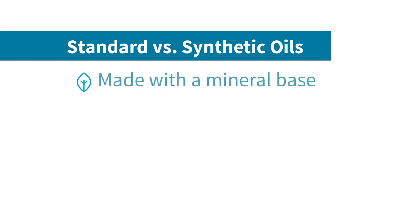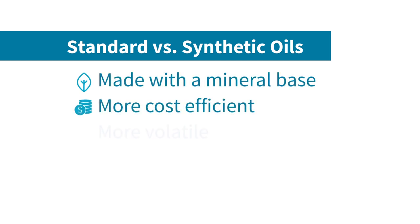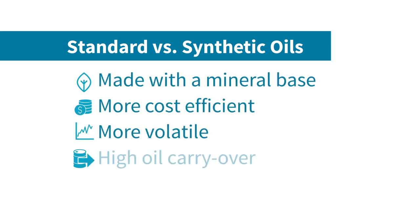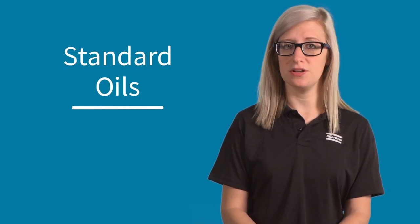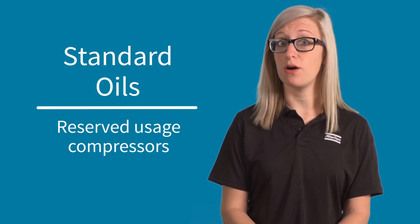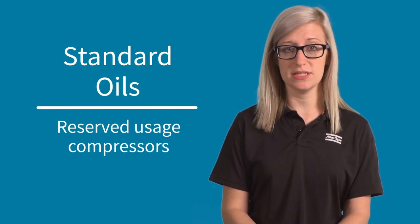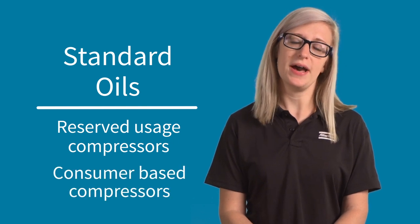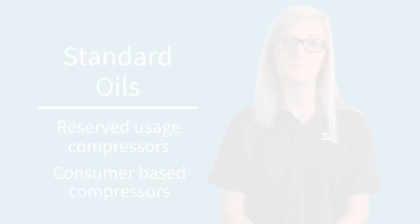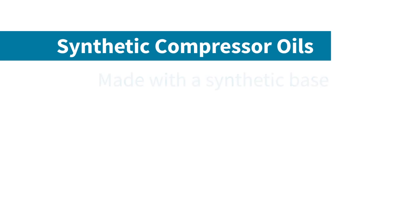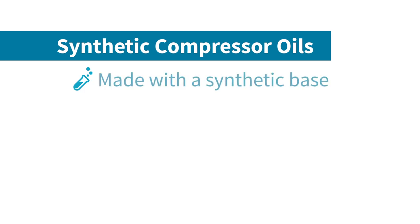There are two types of compressor oil: standard or mineral oil, and synthetic oil. Standard compressor oil is made using a mineral base and is cheaper than synthetic oil, but it's also more volatile, has a higher oil carryover, and is used up faster. Standard oil is usually ideal for compressors that aren't used continuously, or for homeowners and DIYers with less robust applications.